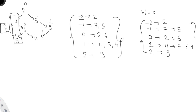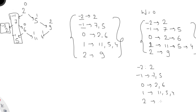We're using a TreeMap so entries are stored in sorted order by key. Once done, we print the map. It prints: for minus 2 → [2], for minus 1 → [7, 5], for 0 → [2, 6], for 1 → [11, 5, 4], and for 2 → [9]. This is how we print all nodes in vertical order.